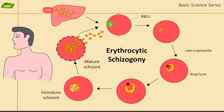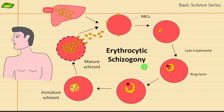This cycle is very important to study because it is the one that is really dangerous for the human body. I hope the erythrocytic schizogony is now clear. We'll meet in the next video where we will discuss gametogony, the stage after this. If you like the video, please give a thumbs up, share it with friends who need help with parasitology study. Please subscribe to our channel and stay tuned for more. Thank you and take care.